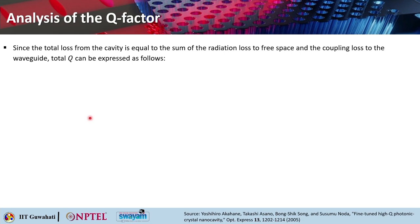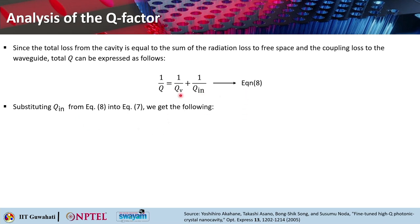Since the total loss from the cavity equals the radiation loss to free space plus the coupling loss to the line waveguide, the total Q satisfies 1/Q = 1/Q_V + 1/Q_in. Substituting Q_in from this into the previous equation, you get T = (Q/Q_V)², which is the same formula used in the measurement procedure. This is how the quality factor is obtained, and combined with the modal volume V calculation, gives the high-Q resonant cavity performance.